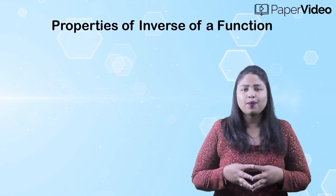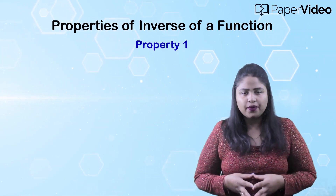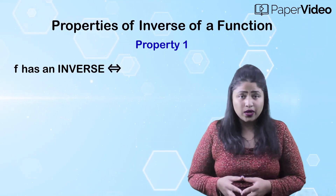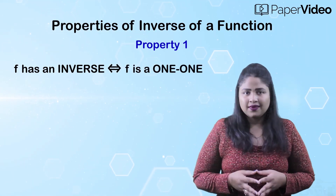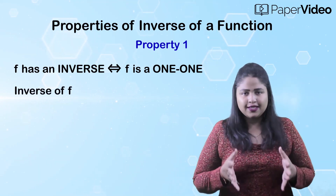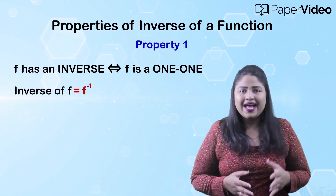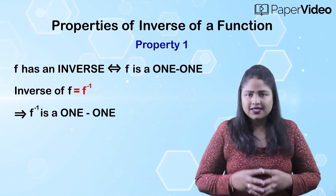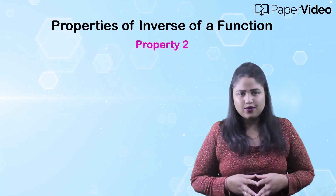In this video, we will discuss some important properties of the inverse of a function. According to the first property, a function f has an inverse if and only if the function f is a one-to-one function. The inverse of f is denoted by f inverse, and the function f inverse is also a one-to-one function.